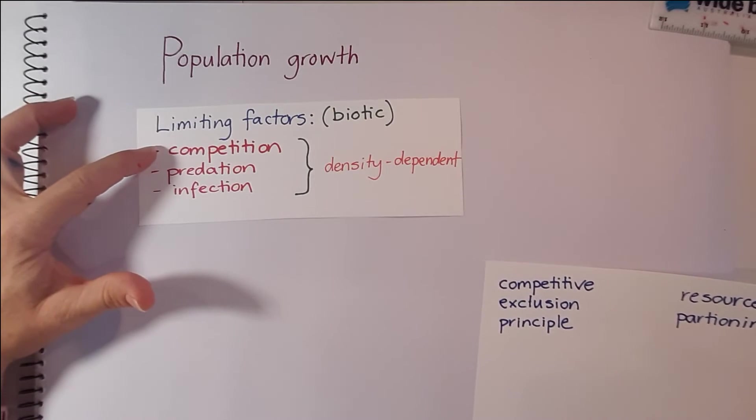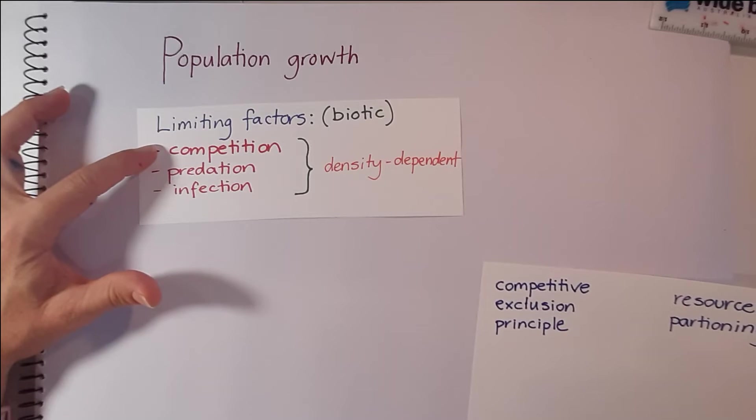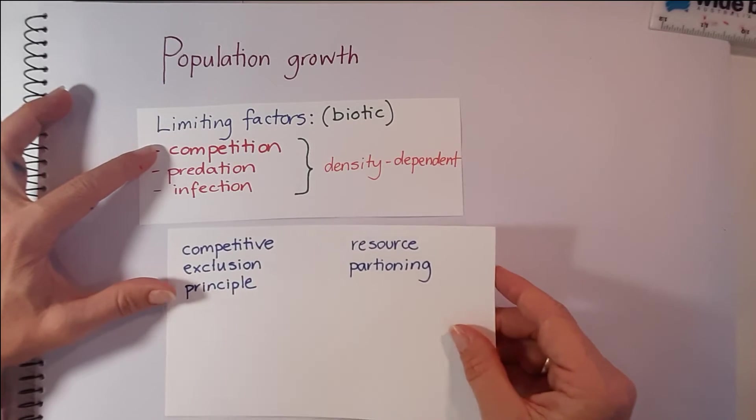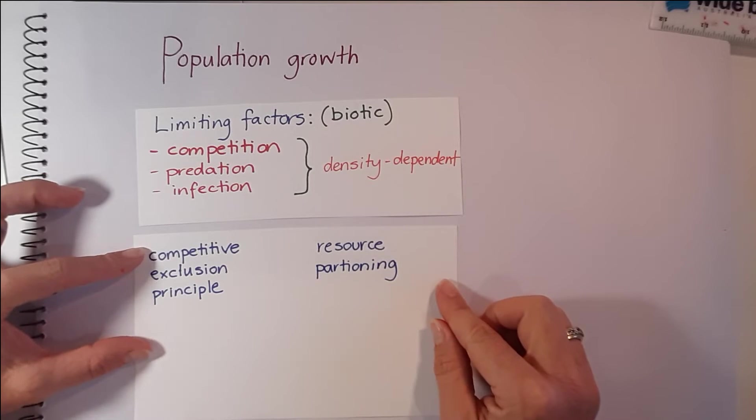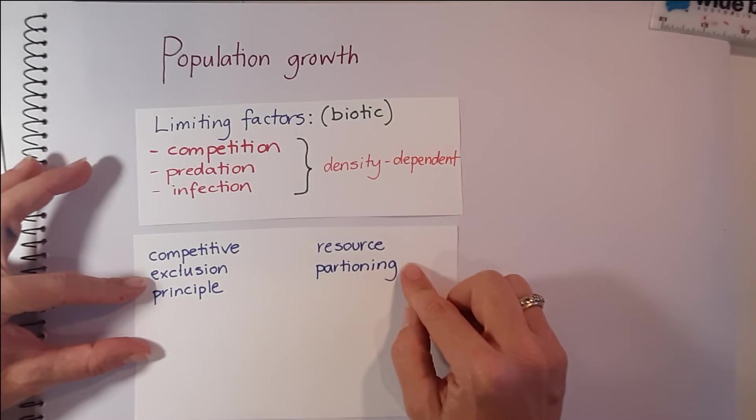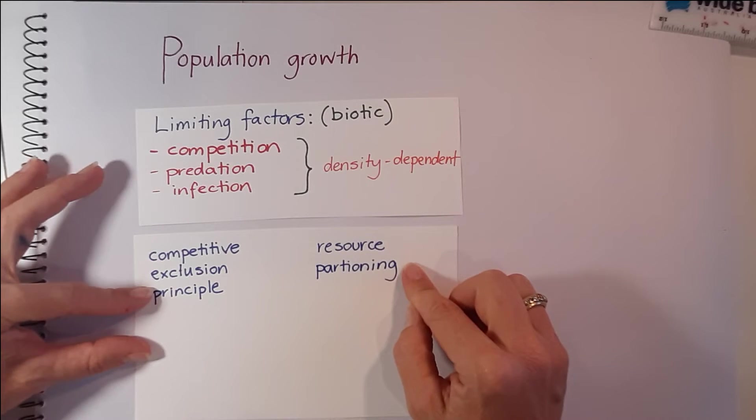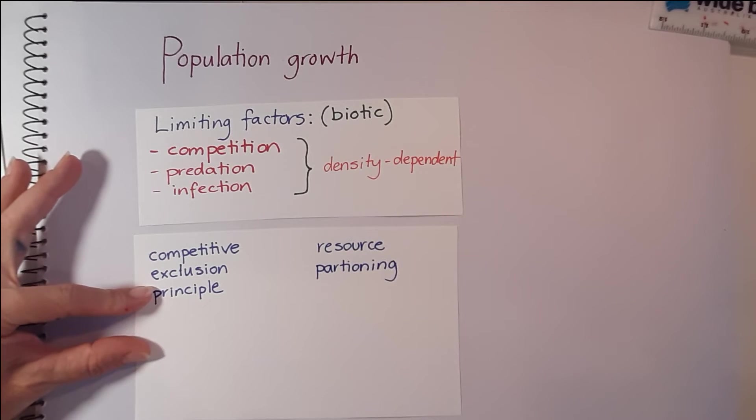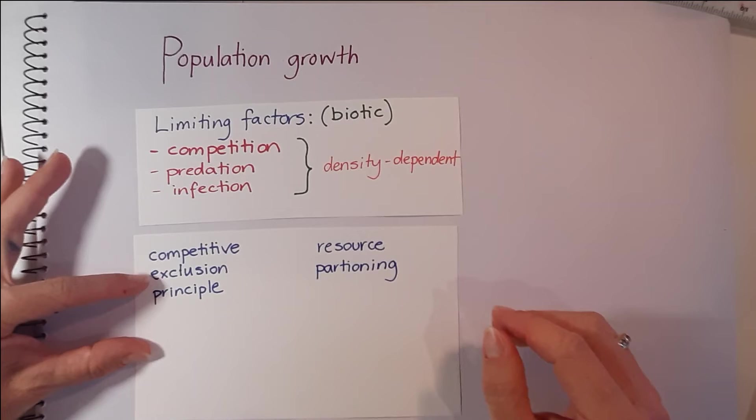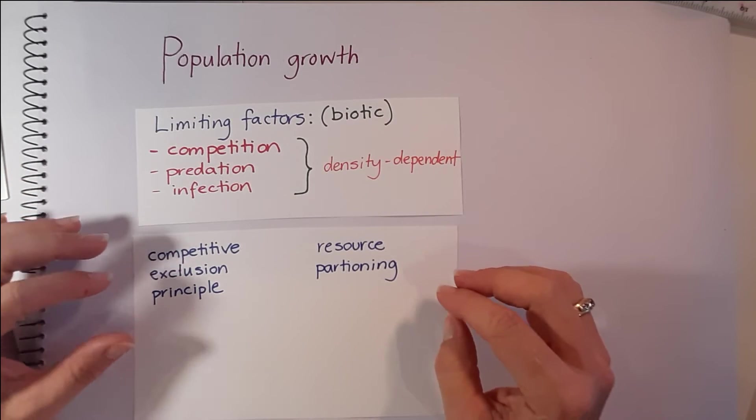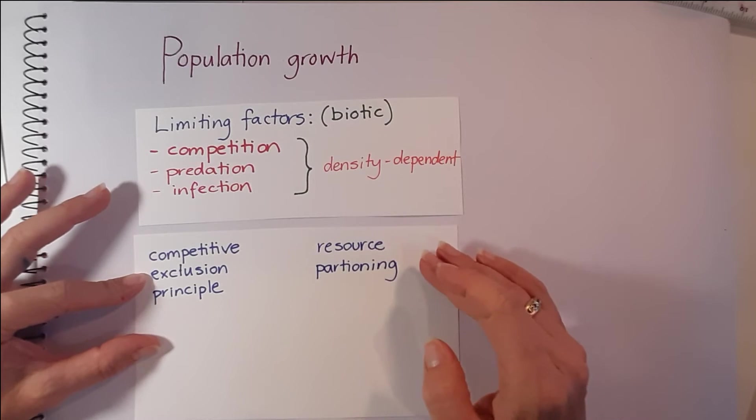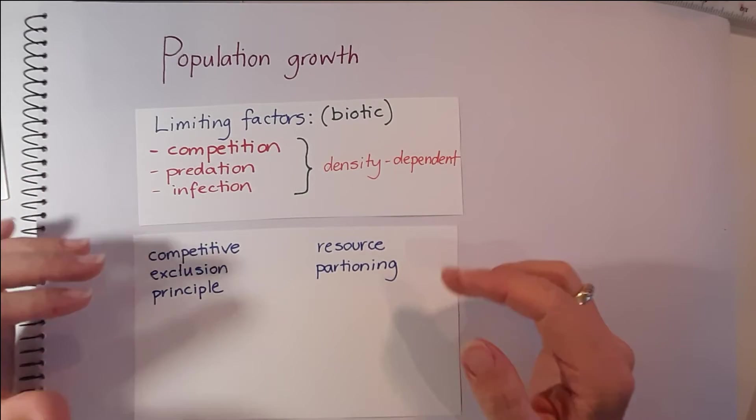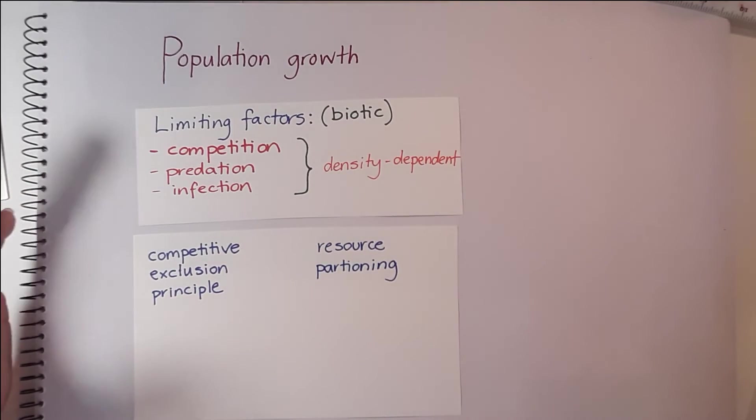If we come back to the competition limiting factor, there's two aspects that we'll talk about in another video, and that's the competitive exclusion principle and resource partitioning. The competitive exclusion principle states that no two species can simultaneously occupy the same niche for a long period of time, and what ends up happening is that they partition the resources amongst them.